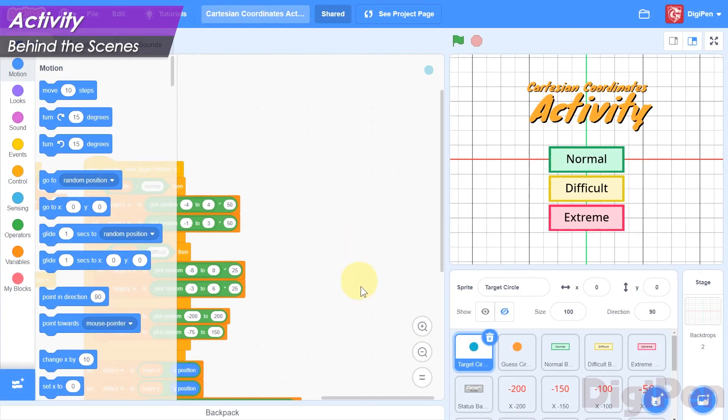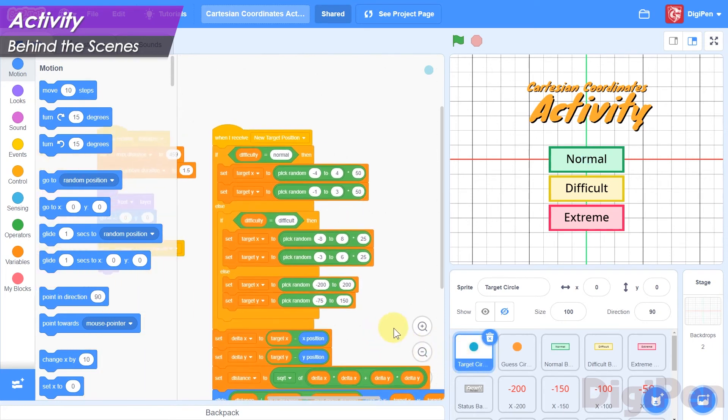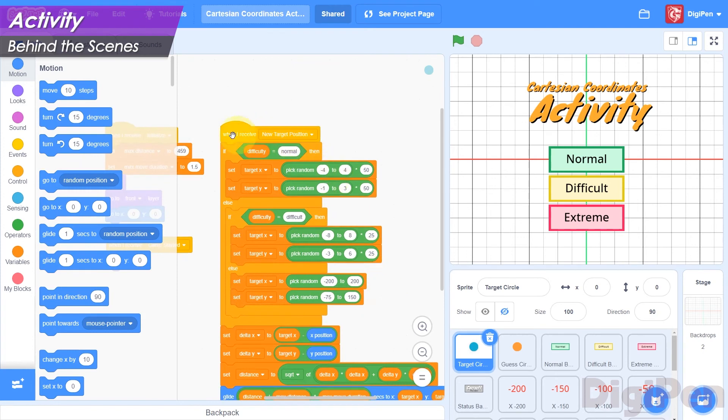Let's begin by looking at the target circle sprite's code area. Find the When I Receive block with the New Target Position event selected.